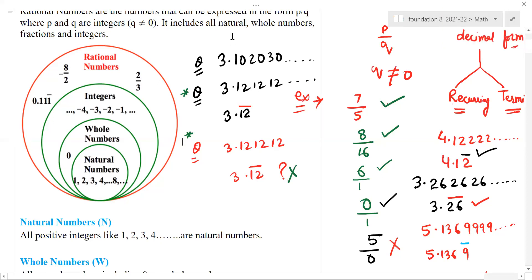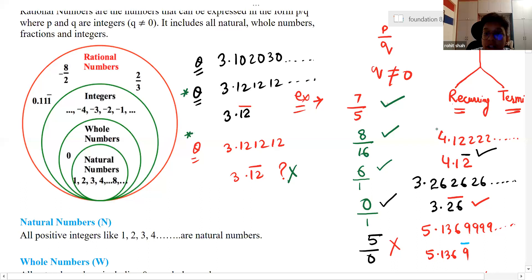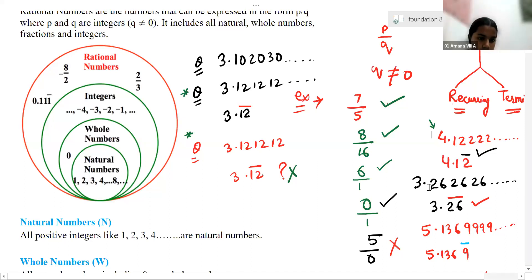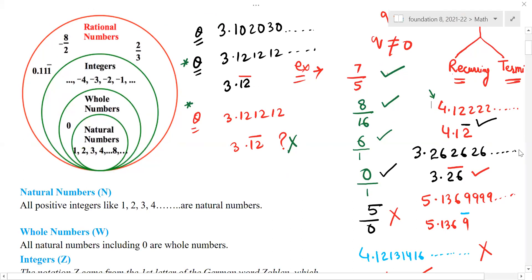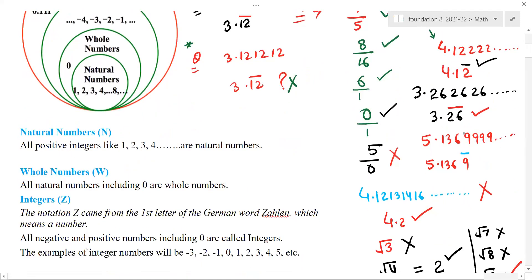One more question — in decimal form, 4.1222 with dots: which number is recurring? 2 is occurring again and again. So the bar should be on 2. Next: 3.262626 — which number is recurring? 2 and 6. So we keep a bar over 2 and 6. Similarly, 5.1369 — bar over 9.